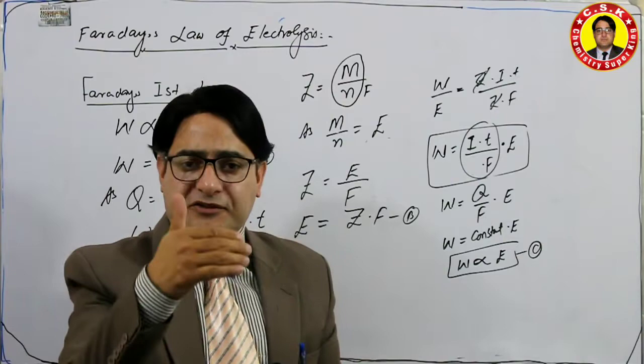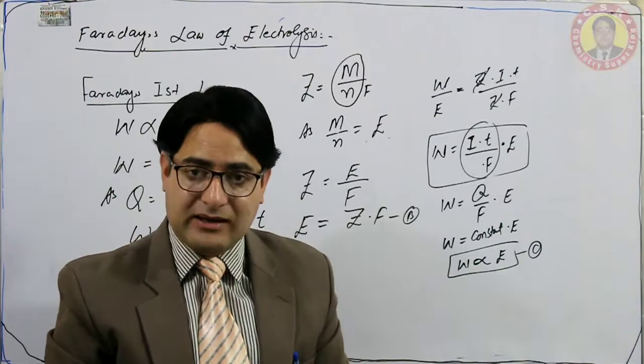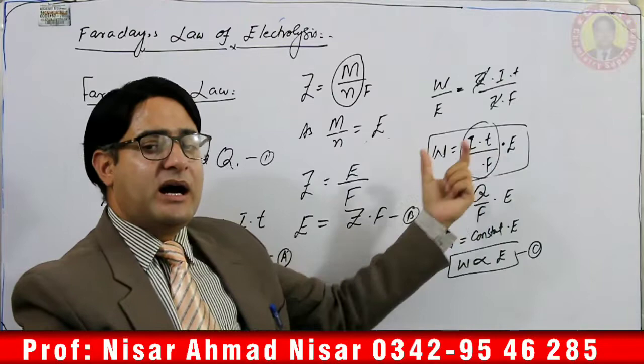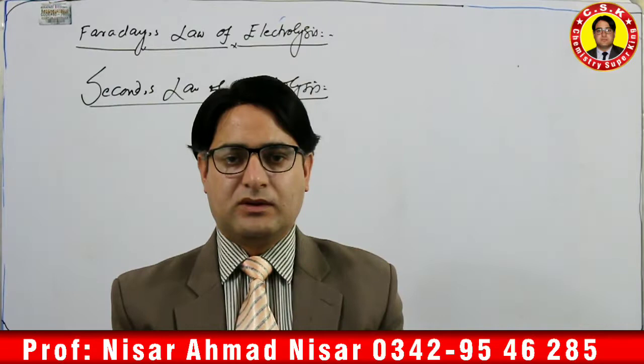Note that the relation our textbook presents for the Second Law — W ∝ E — is actually derived here and is the correct relation for the Second Law. The book sometimes incorrectly attributes it elsewhere. Now let us discuss the Second Law of Electrolysis.